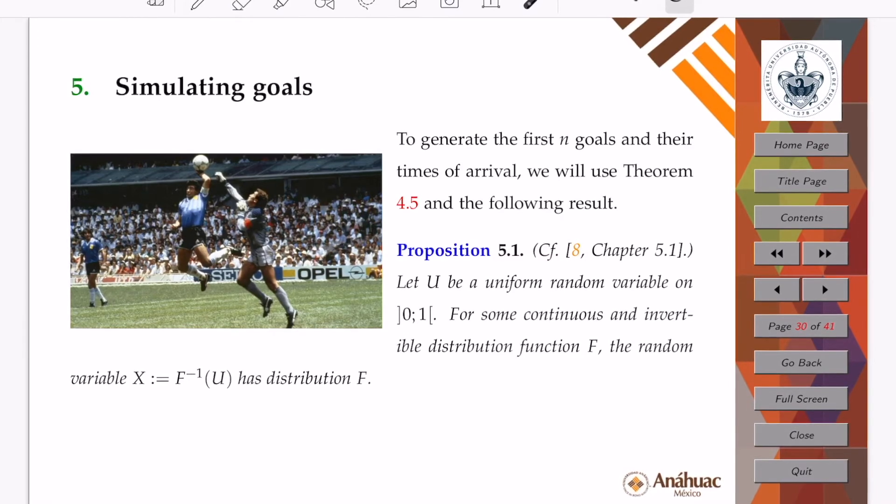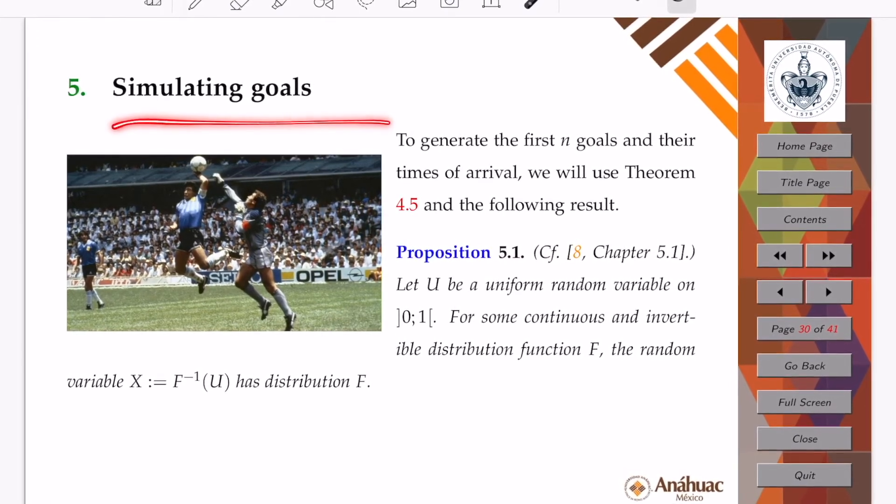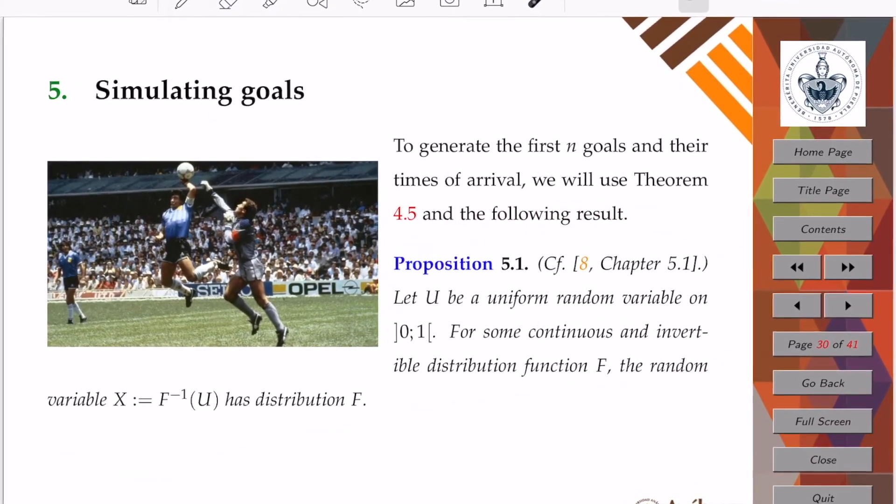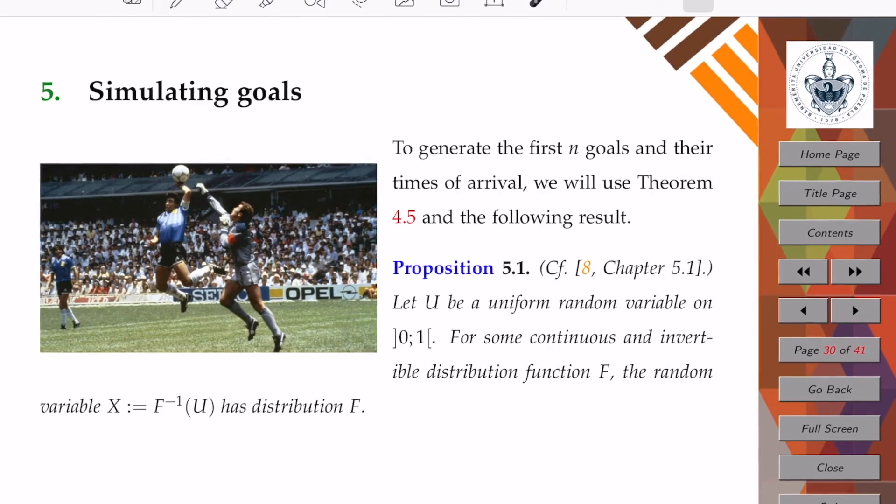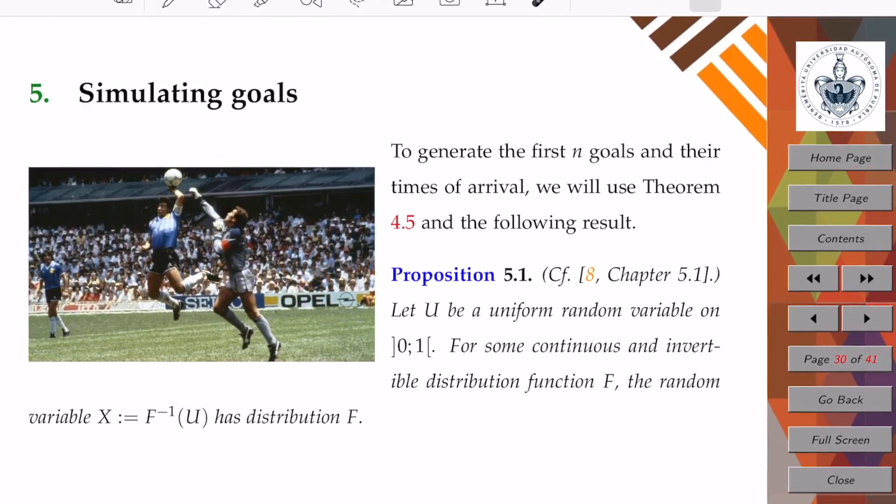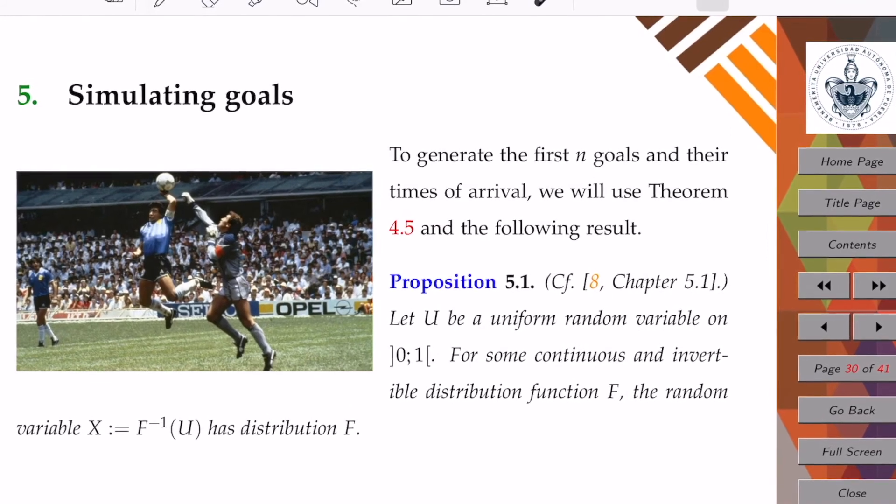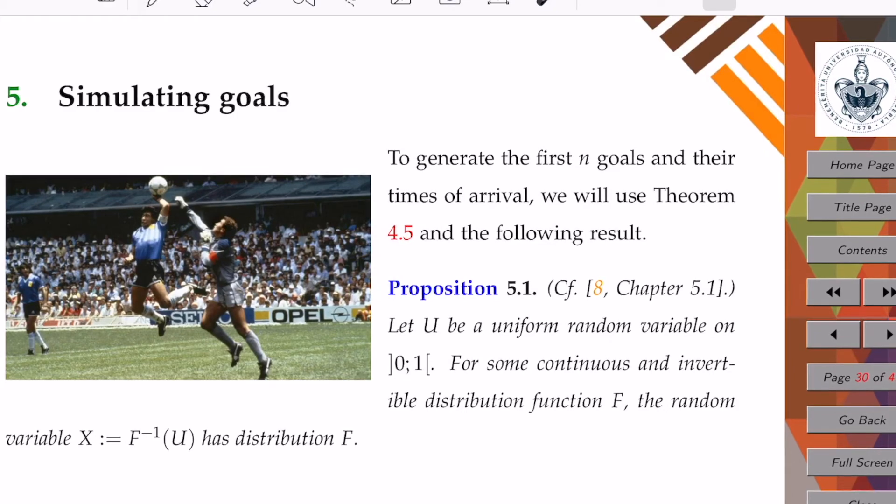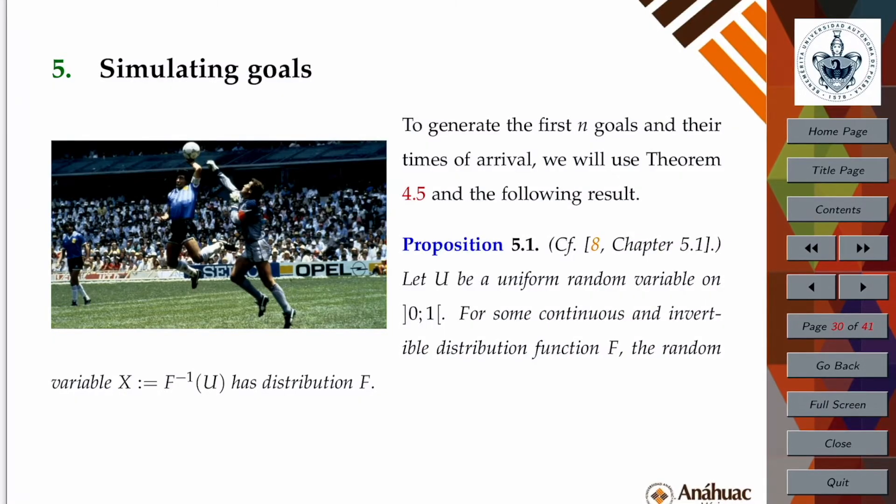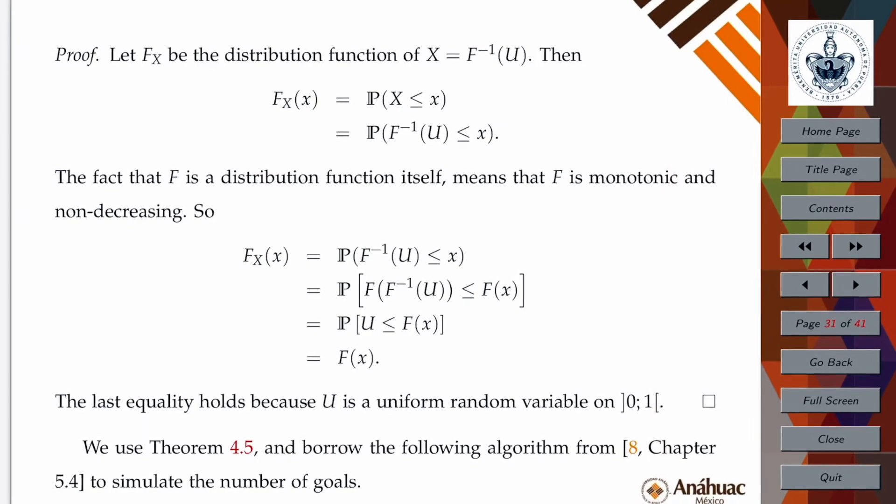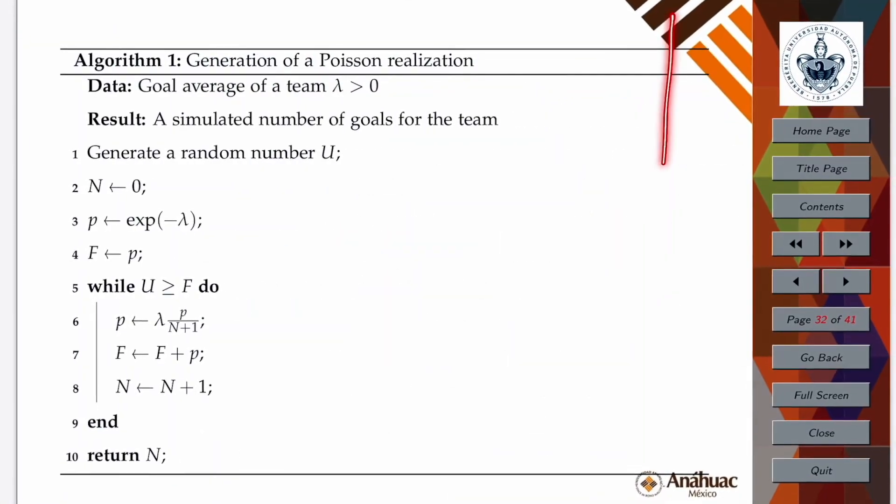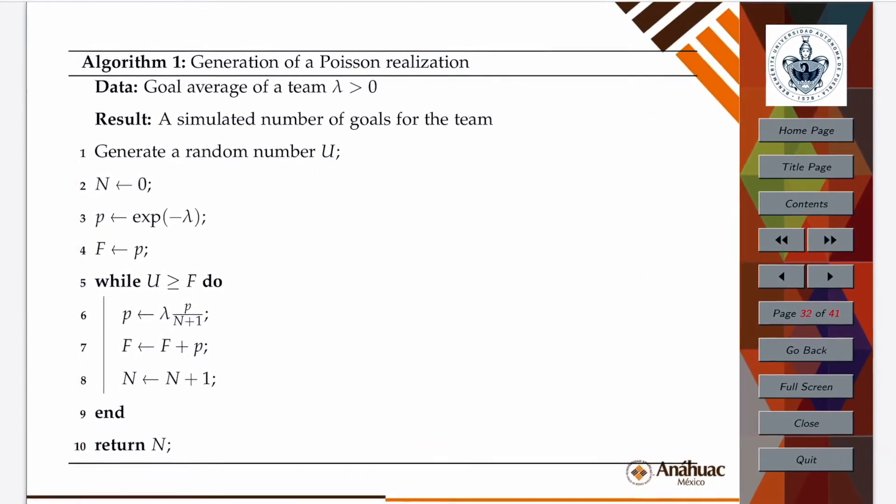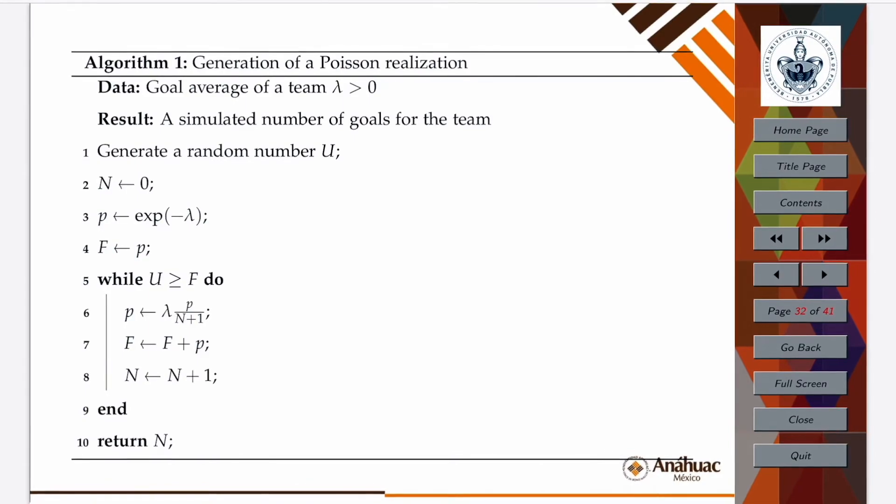This is essentially the idea behind the proof of the fact that these times of arrival are distributed according to an exponential random variable. We will use this idea to simulate goals. We will take the inverse transform method for simulating realizations of a given random variable, in our case exponential random variables, which will represent the times of arrival of each of the goals during a given match.